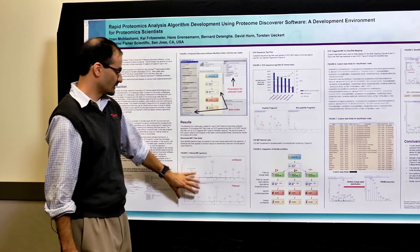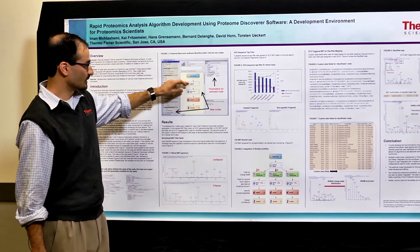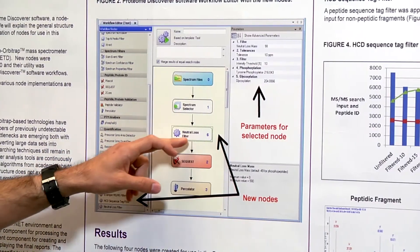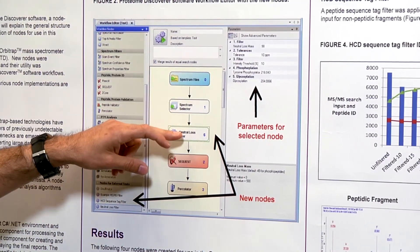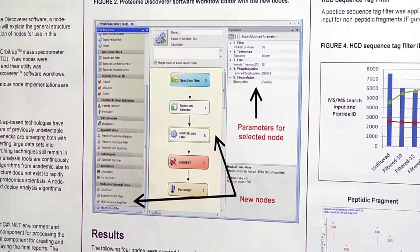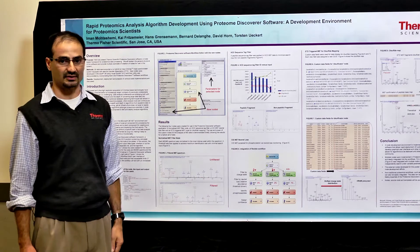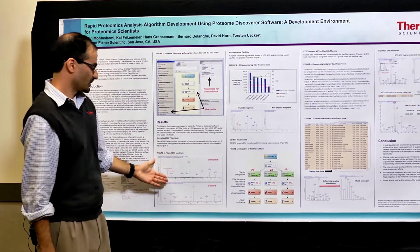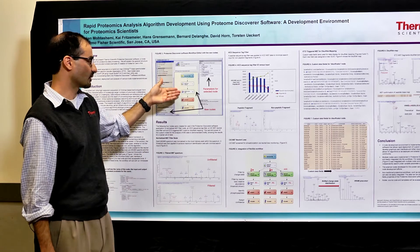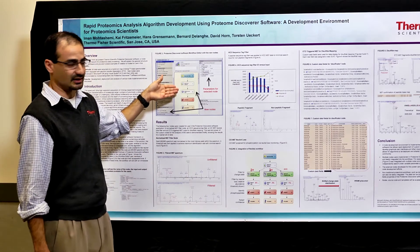Here I have some examples of a neutral loss filter node that is between the spectrum selector and a search node. You can see that when you drag and drop the filter within these two node areas, you can get the output without actually altering any other part of the Discoverer program. The display features and the reporting features are not affected by any node development code that is within this encapsulated region.